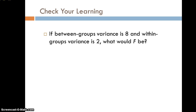The between-groups variance goes on top and the within-groups variance goes on the bottom of your ratio. Take a minute and calculate what you believe the F-statistic would be. If you said the F-statistic is 4, you'd be correct — you take the between-groups variance of 8 and divide it by 2, and you get 4.